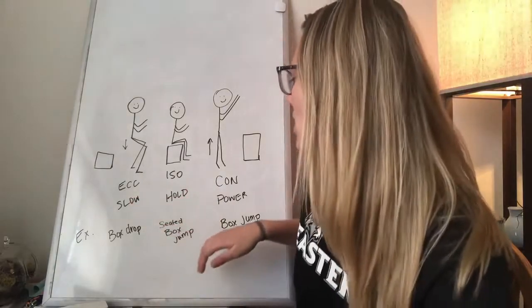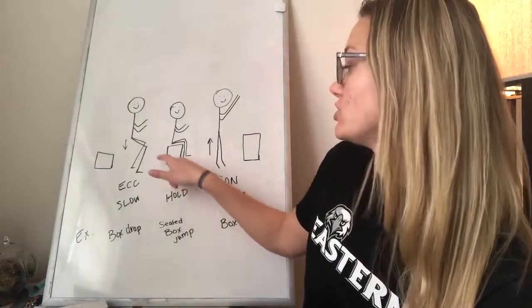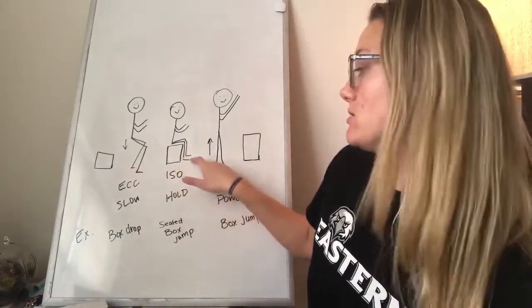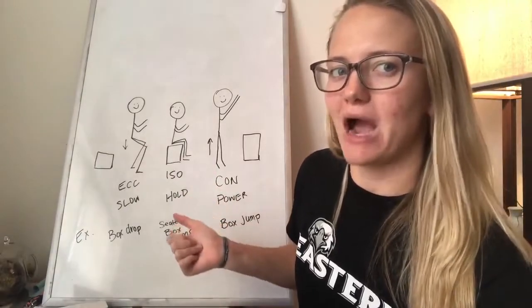So you have no time or range of motion to lower down anymore because the box is in your way. So that's where you start with an isometric and then you're powering up.